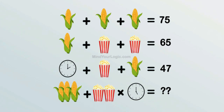This is the most viral puzzle, in which corn, popcorn, and clock are arranged in the form of a linear equation. With the help of those formulated equations, you need to observe and identify which equation will help you find the individual value of them, leading to the formulation of the final equation.